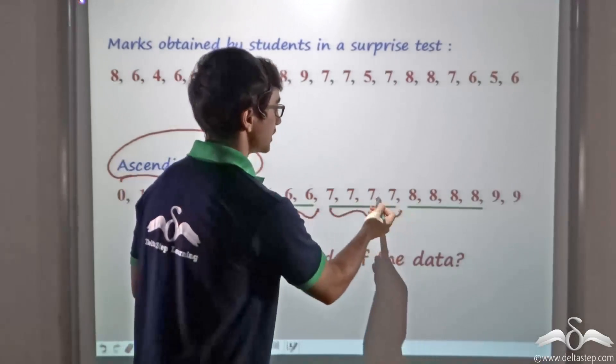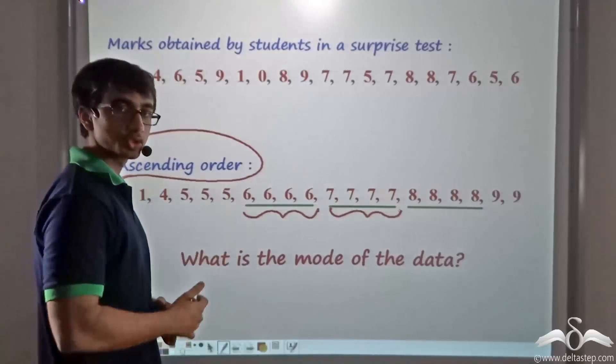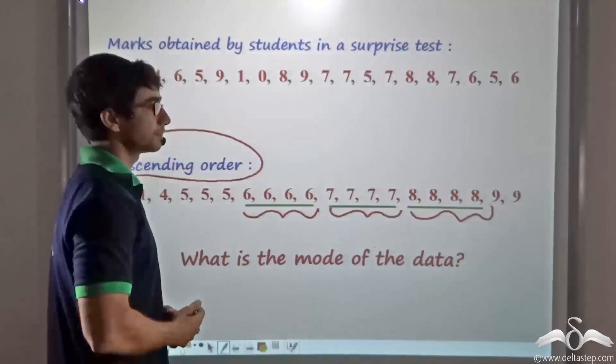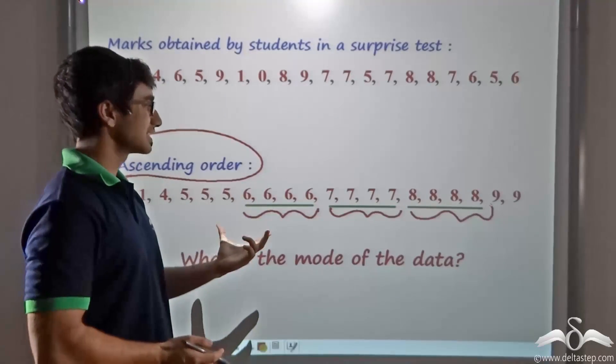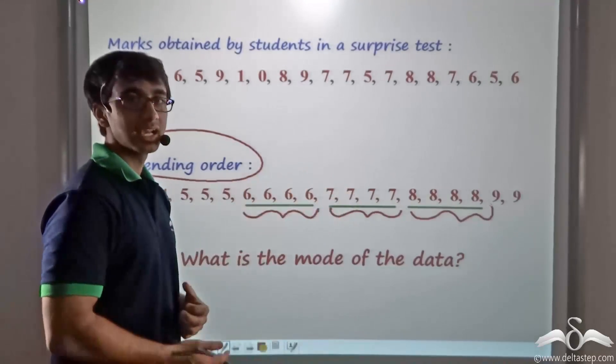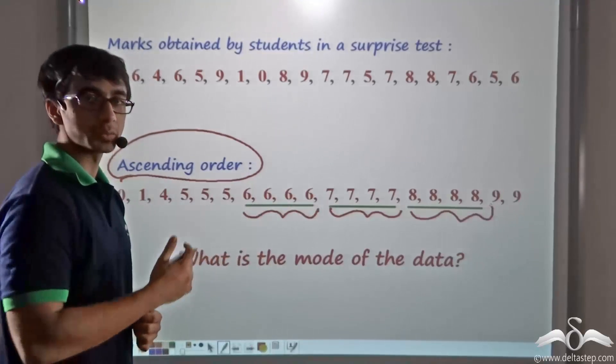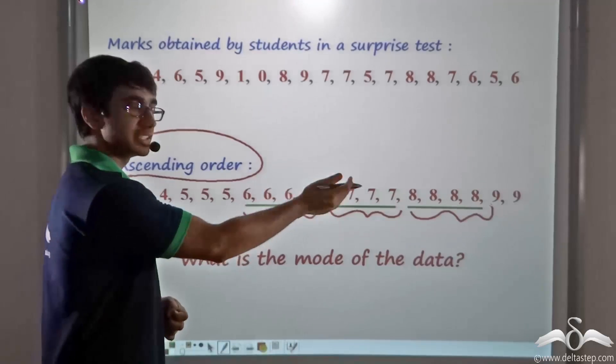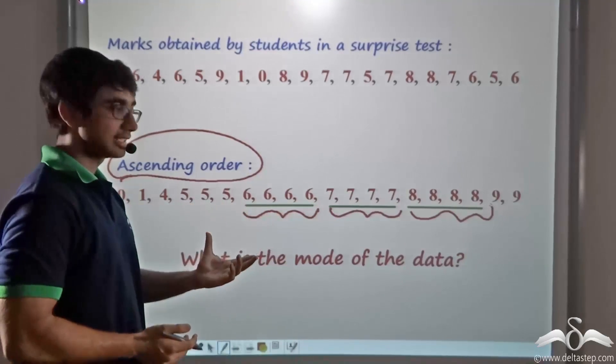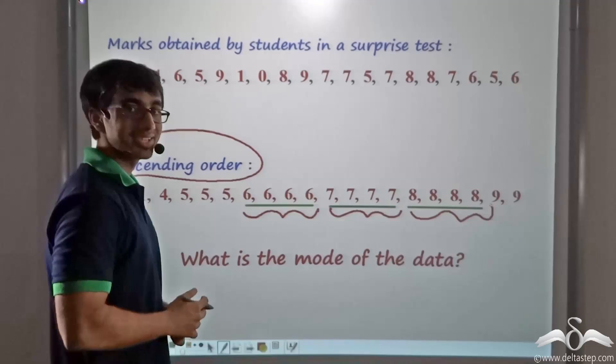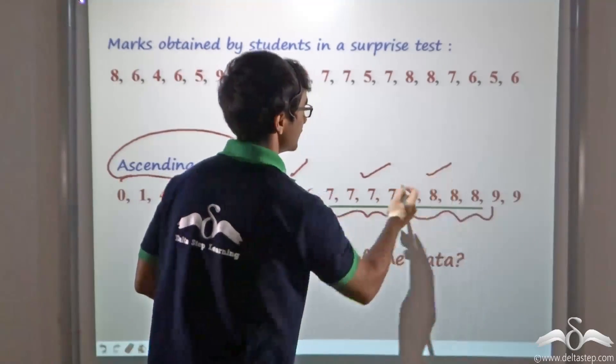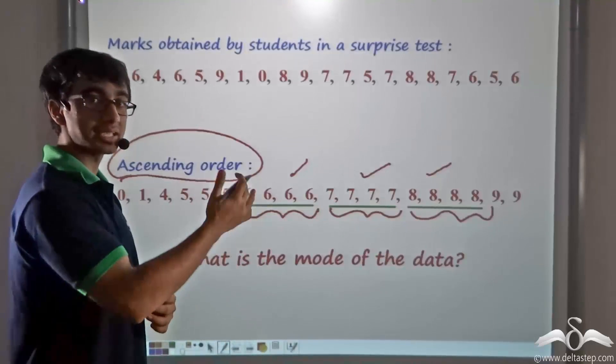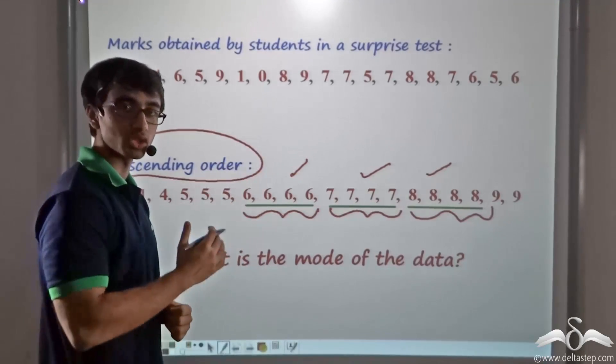Similarly, the number 7 has been obtained by four students, and the same is the case for the number 8. So here we find that 6, 7, and 8 are each occurring with equal frequency. The mode of the data can be represented by each of these three. This particular data set has no one mode; it has instead three modes: 6, 7, and 8, because all these three numbers occur with the same frequency, and that is the highest frequency of occurrence.